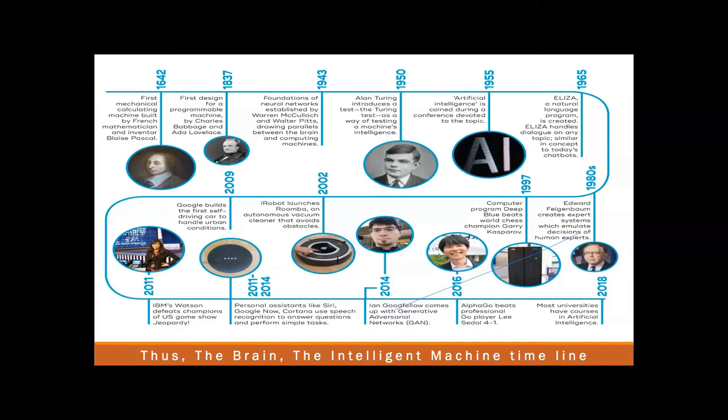In the 1980s, Edward actually created expert systems, which emulate the decisions of human experts — for example, medical expert systems. It's all rule-based: if the blood pressure is like this, if there's a cough, if there's an X-ray like that, then the expert system will say this person has this particular disease, and this is the treatment.